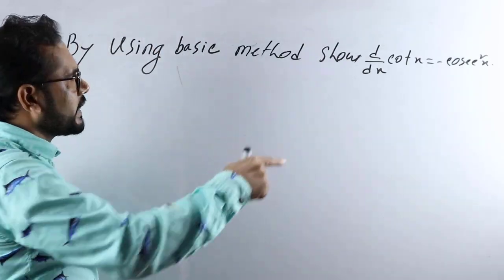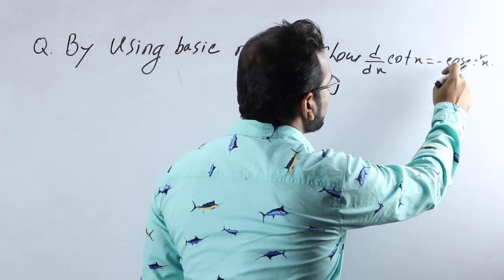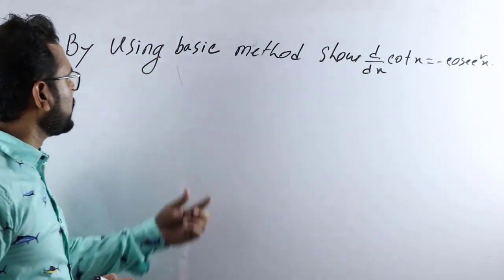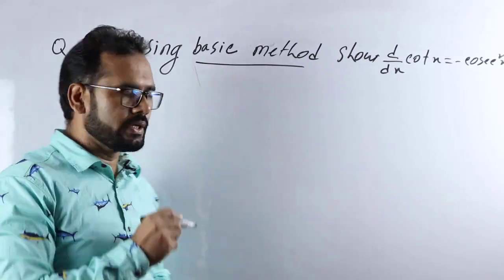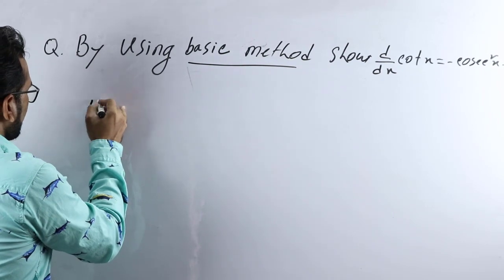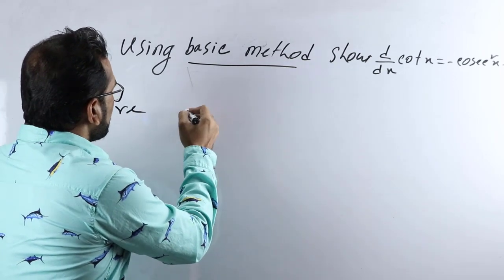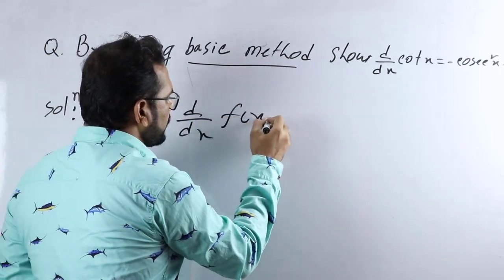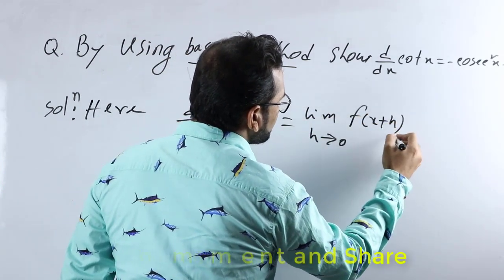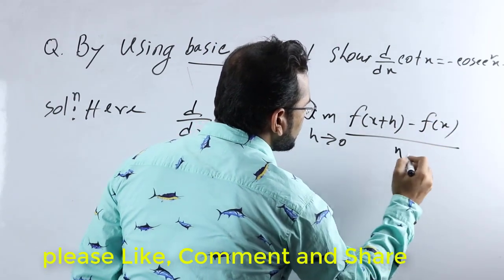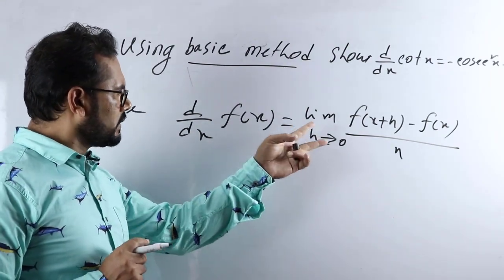Today's question is: prove that d/dx of cot x equals minus cosec squared x, by using the basic method. The basic method is: d/dx of f(x) is equals to limit h tends to 0, f(x+h) minus f(x), divided by h.